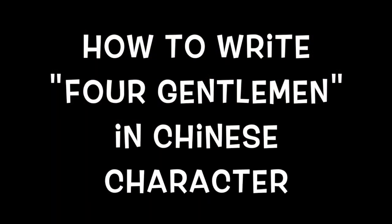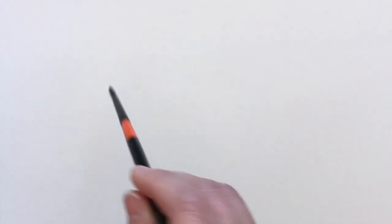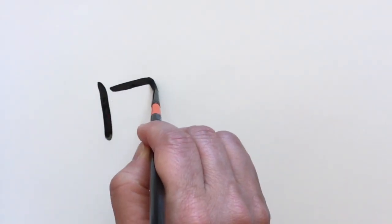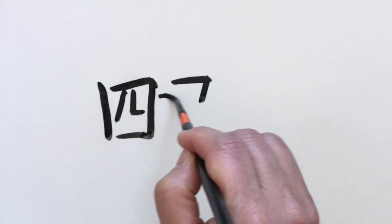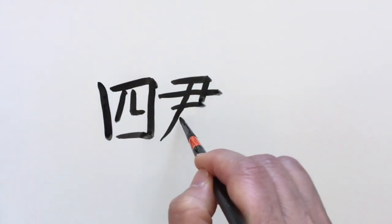Now one more thing. We're going to learn how to write the characters Sa Gunja, four gentlemen. We're going to learn how to write each character one by one.